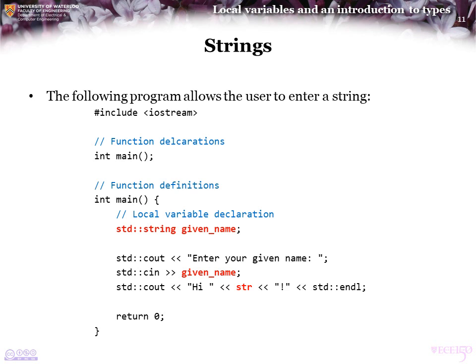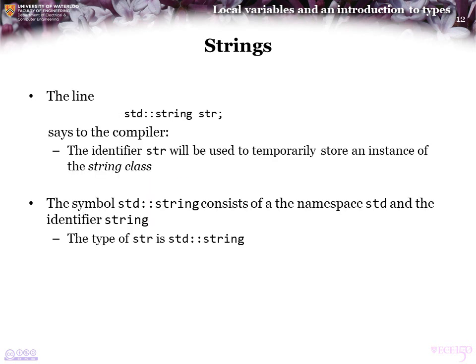The following program is slightly different — it allows the user to enter a string of characters. Here we see str declared to be of type std::string. This says to the compiler that the identifier str will be used to temporarily store an instance of a string class. We will explore this more later in the course, but at this point you can understand that this local variable str is capable of storing a sequence of characters, and when we print out that local variable, it will be printed as that sequence of characters. The symbol std::string consists of the namespace std and the identifier string, so we say the type of str is std::string.